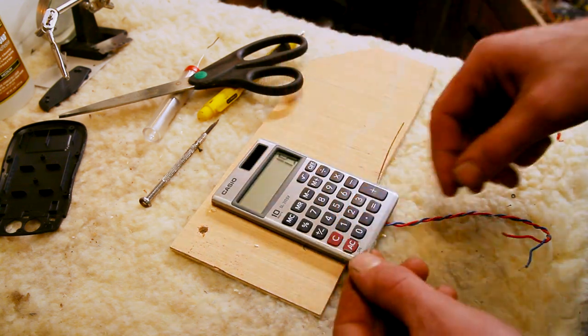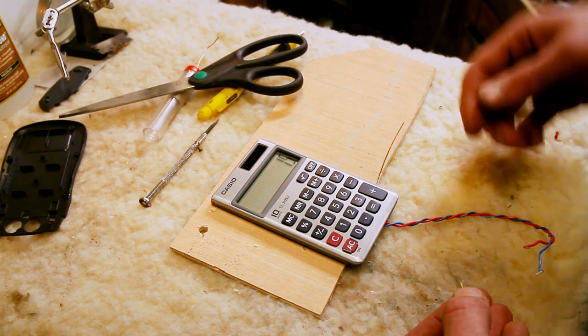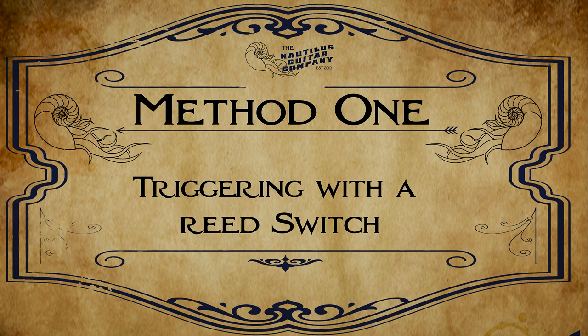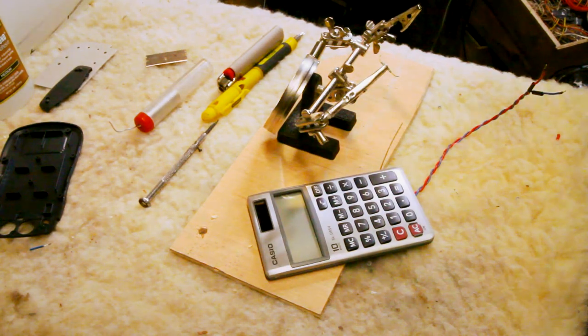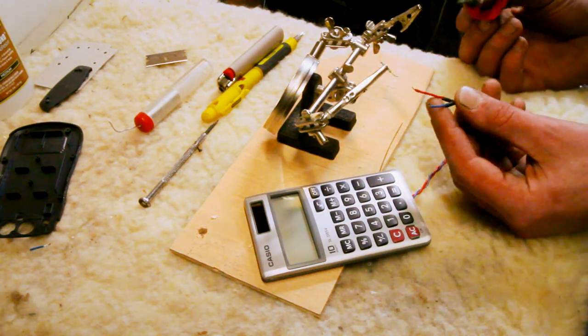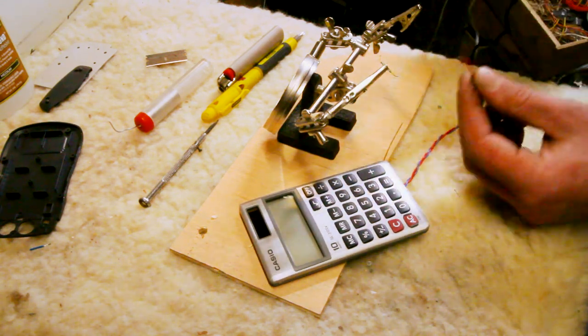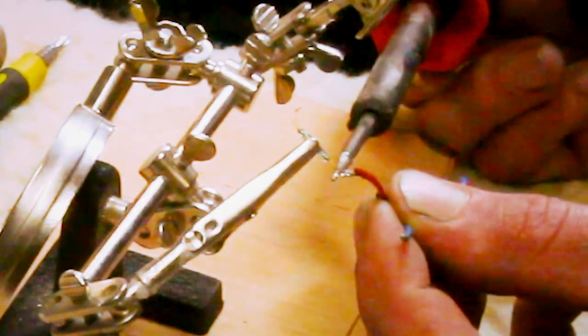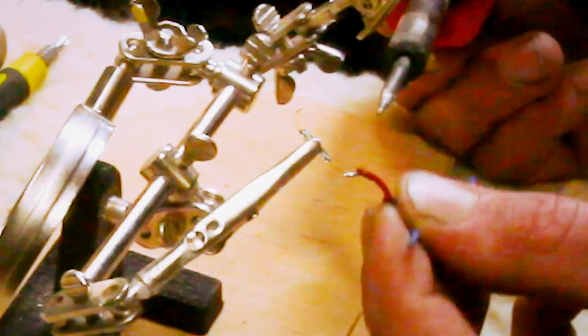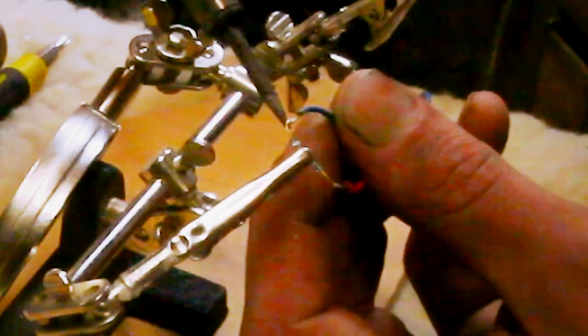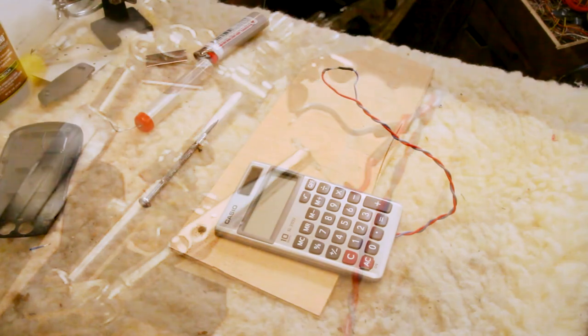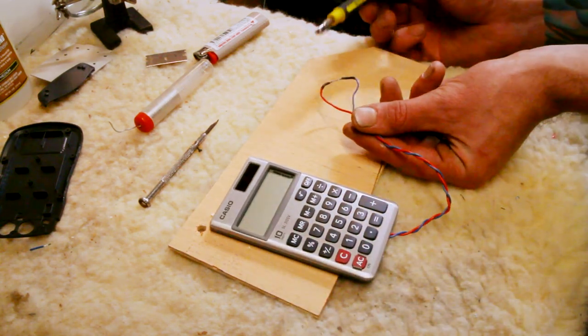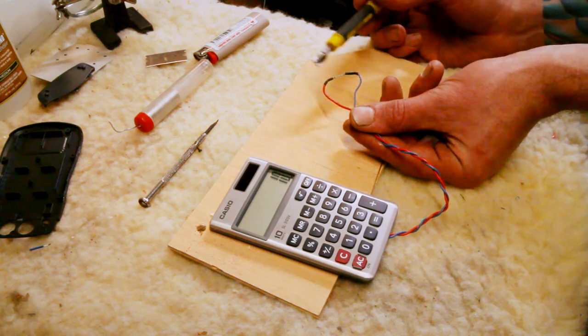Now all we need to do is connect our reed switch to these, and every time the magnet turns and passes it, it'll register as one. Now that we have our wires whipped with solder, all we need to do is connect the reed switch to those wires. Got a couple little pieces of shrink tubing. Let's get these wires bent so it's easy to solder on. There's one, there's the other. All right, let's give this a shot. One plus one, looks like it's going to work.